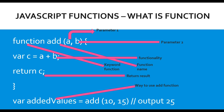Next we perform some task; if there are parameters you work with them, like we are doing here with a and b, and then you return the result to the place from where the function is called. The calling site stores the return result — in this case 25 — in the 'addedValue' variable. Please remember: a function may or may not have parameters, and it may or may not return anything, based on requirement.